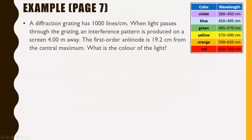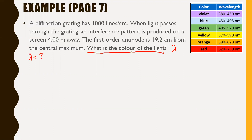This is on page seven of the work booklet, question number four. A diffraction grating has 1,000 lines per centimeter. When light passes through the grating, an interference pattern is produced on a screen four meters away. The first order anti-node is 19.2 centimeters from the central maximum. What is the color of the light? We're looking for a wavelength — that's our unknown.